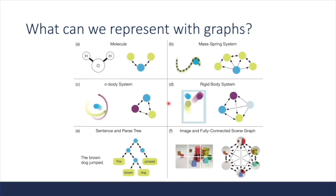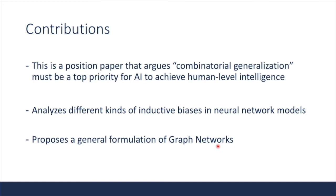Here are some common use cases for graphs. We can represent molecules with graphs, or the interaction between a rigid body system, make a parse tree graph out of sentences, or represent a scene with a scene graph composed of objects in the scene. Having this explicit structure helps model the relationship between entities more easily. The contributions of this paper include: arguing that combinatorial generalization must be a top priority for AI to achieve human-level intelligence, analyzing different kinds of inductive biases in neural network models, and proposing a general formulation of graph networks.